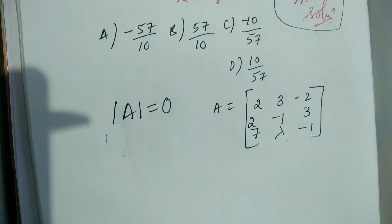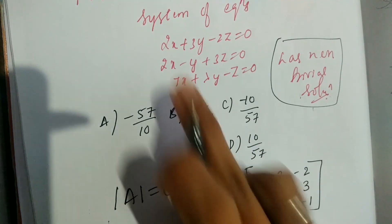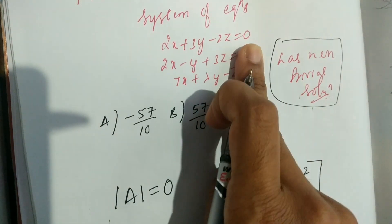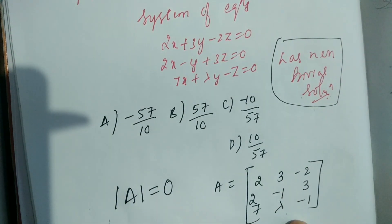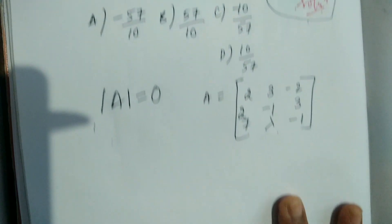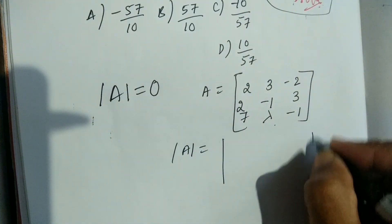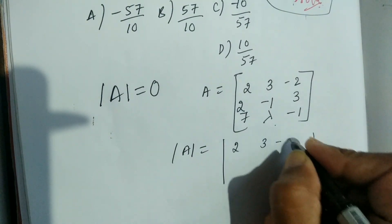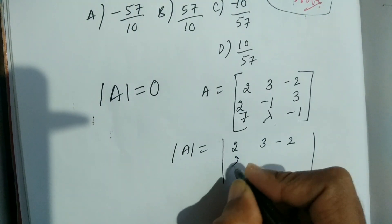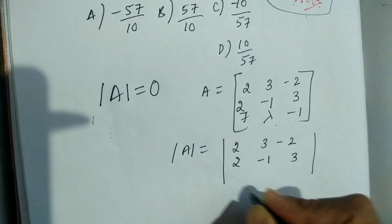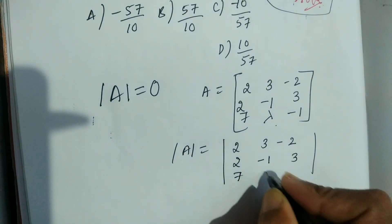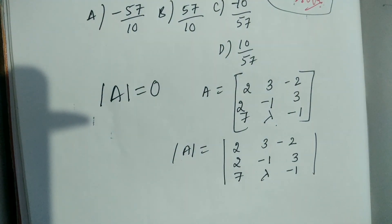For a non-trivial solution, the determinant of the coefficient matrix must be equal to zero. So we need to find the determinant of this 3×3 matrix.